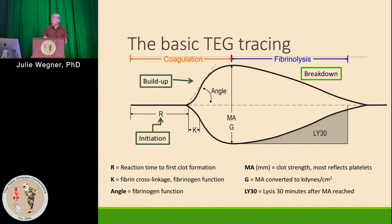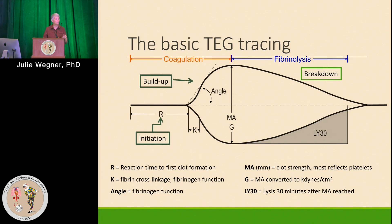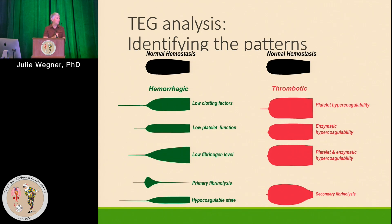Next is the buildup, which is the K and the angle values — they demonstrate how the platelets, fibrinogen, and coagulation factors, specifically thrombin, are all coming together to allow the clot to start building up to its maximum strength. The MA is the maximum amplitude — that's the maximum strength of the clot formed in the in vitro environment. And finally, if there's any plasmin in the blood at the time you take the sample, you might see fibrinolysis. It basically takes you through the entire life cycle of a clot.